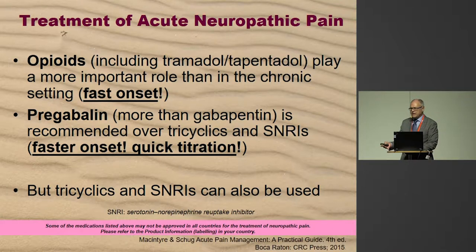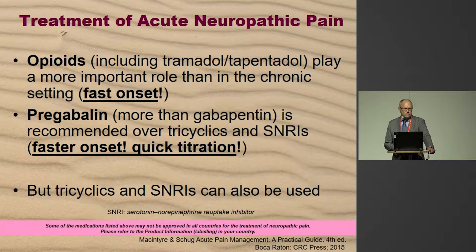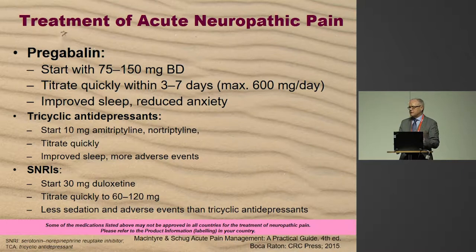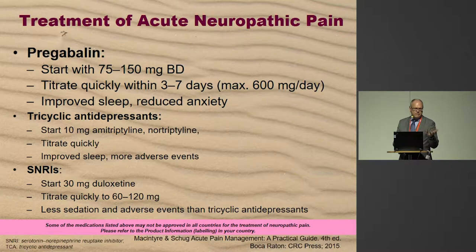With brachial plexus avulsion not requiring IV, you give 150 mg pregabalin in the evening and come back the next morning to find pain already dramatically reduced. In fit young patients — many are bike riders who are very tough — we give 300 mg in the morning and often have complete control within 24 hours, which you would never achieve with a tricyclic or SNRI. Tricyclics and SNRIs can be used but need much more time. I would never titrate so quickly in an outpatient who has to drive and work, but in a hospitalized patient after a severe traffic accident you can go quickly to 600 mg/day.